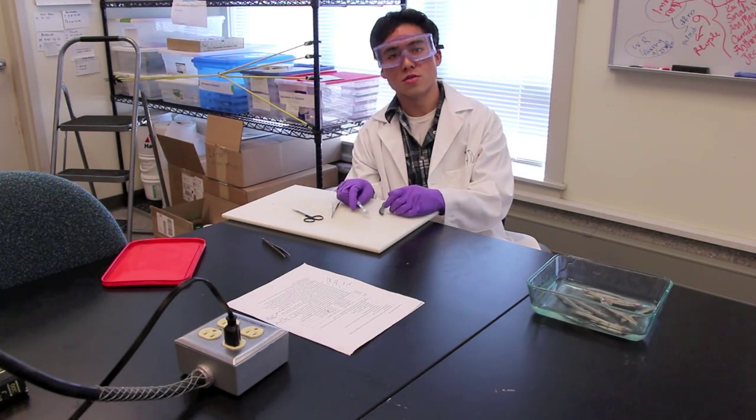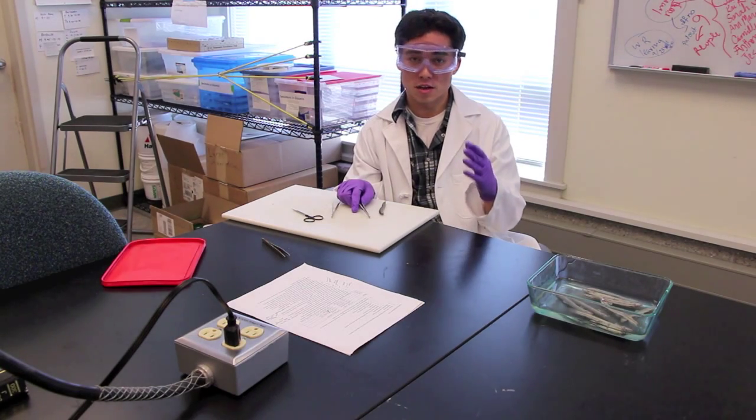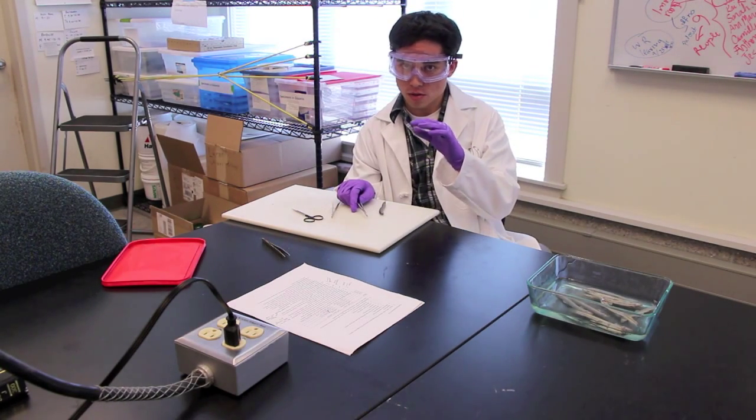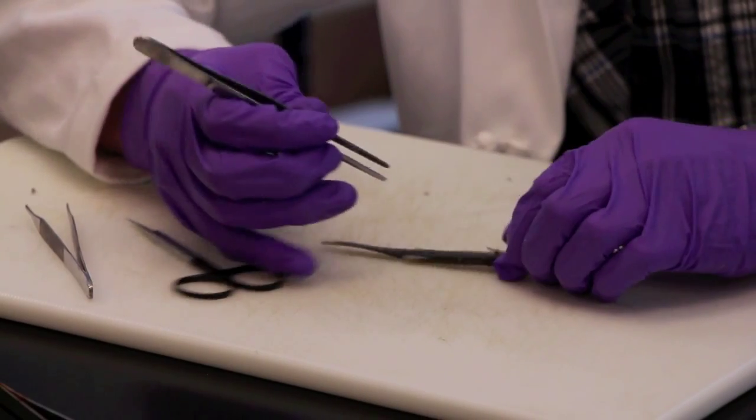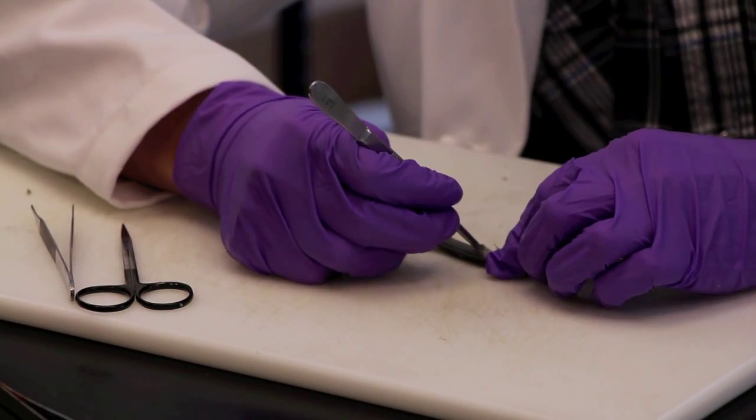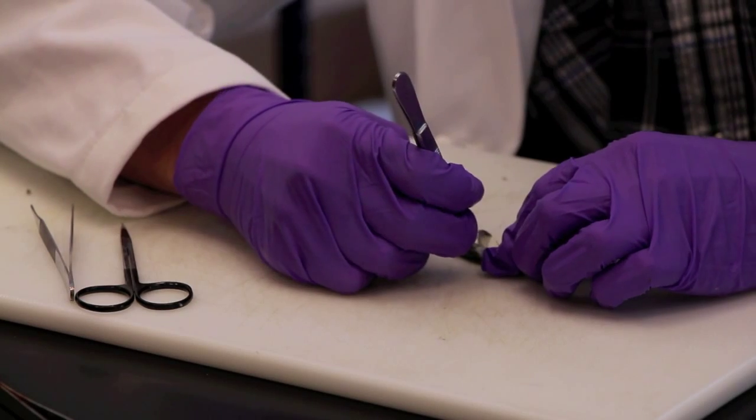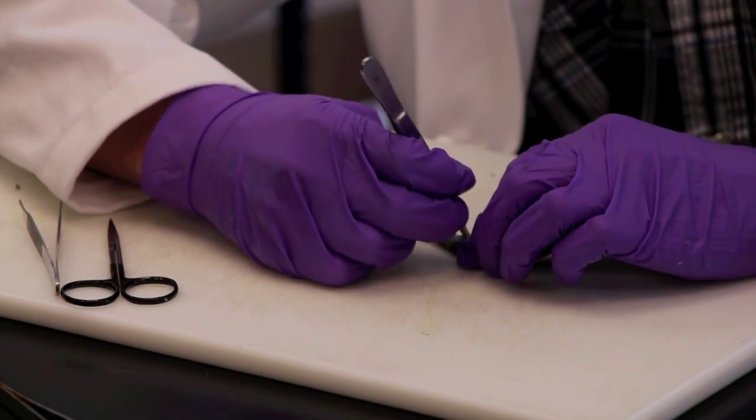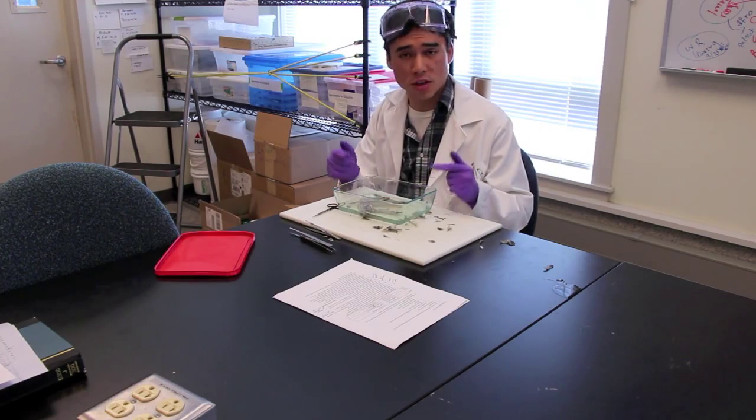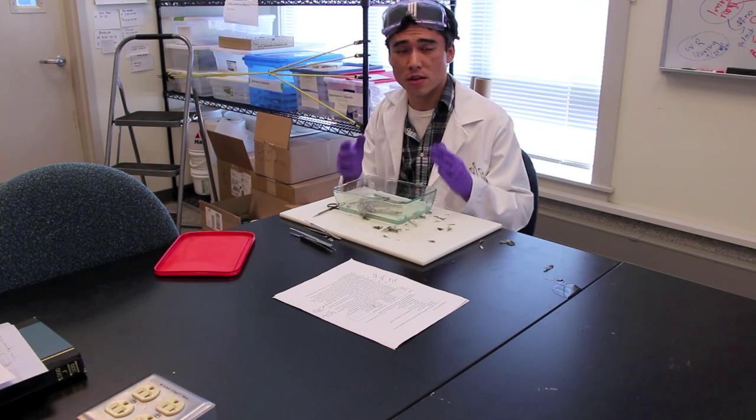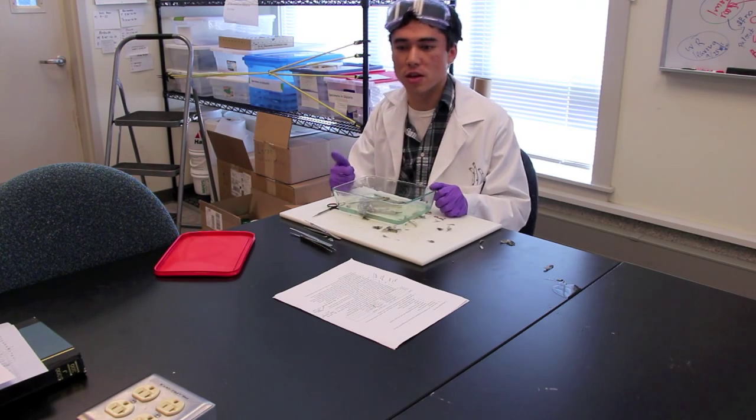Next, we'll skin the specimen to ensure the chemicals that we're going to be using in the next steps are able to penetrate all the way to the skeleton. Okay, so I've just finished skinning the last of the specimens. So that means it's off to the first step of the clearing and staining process.